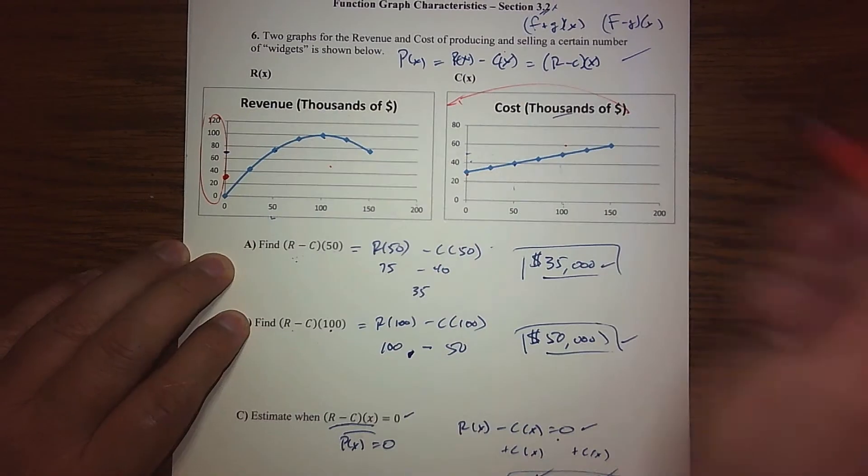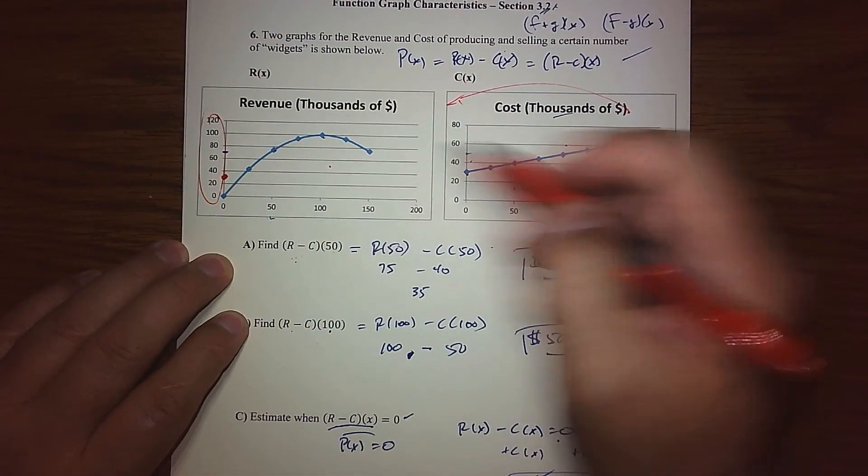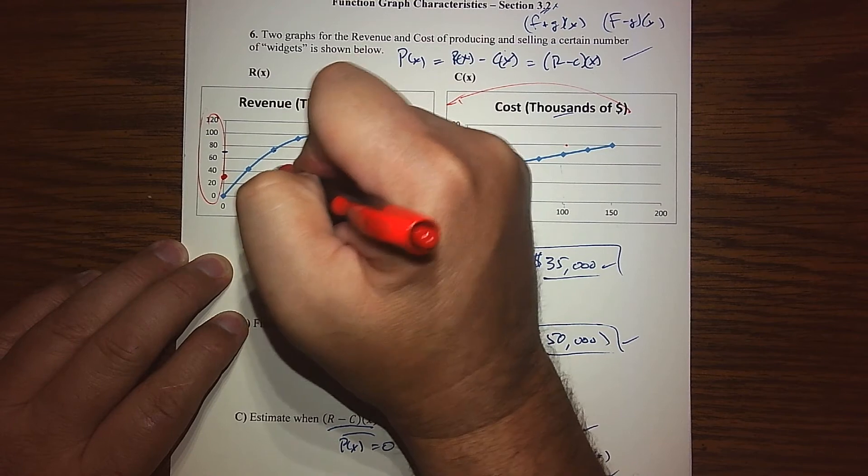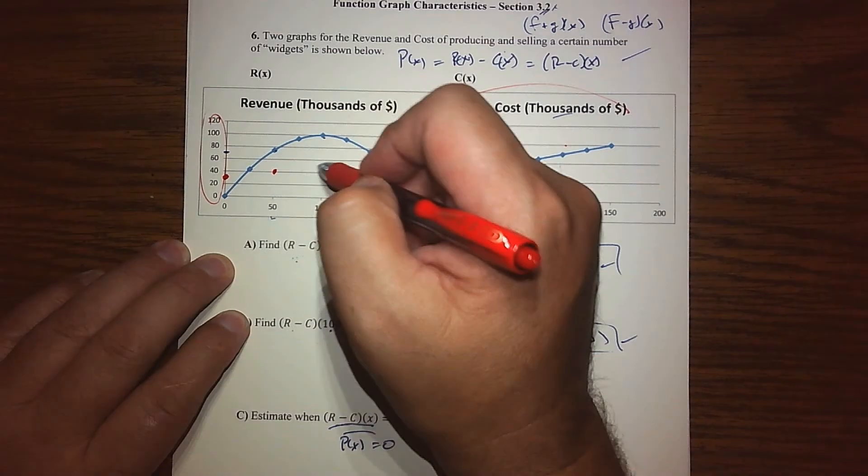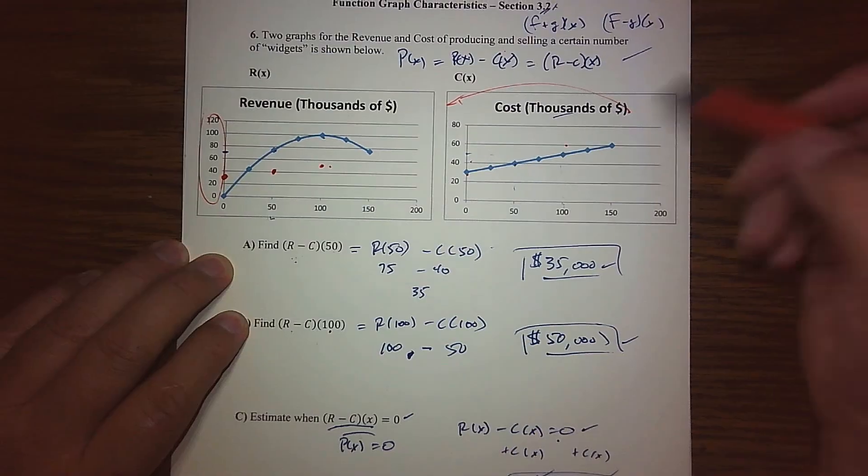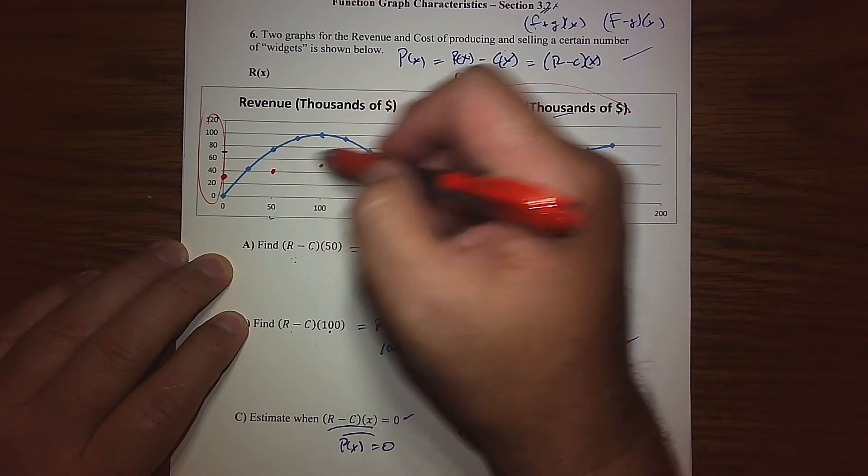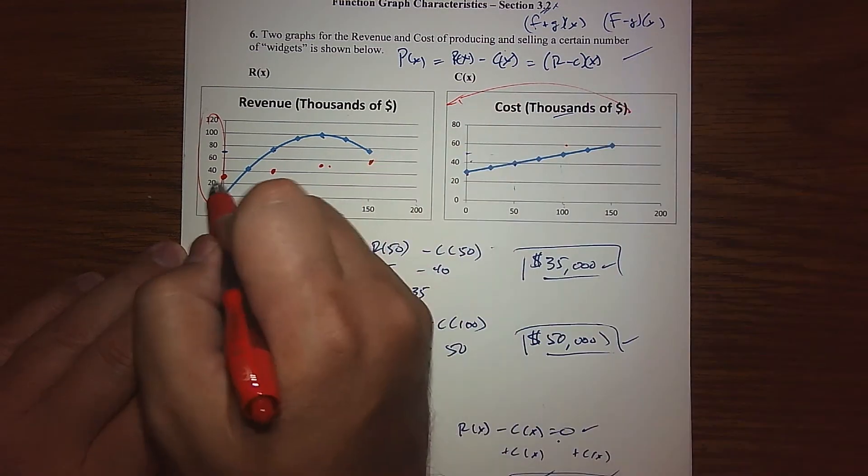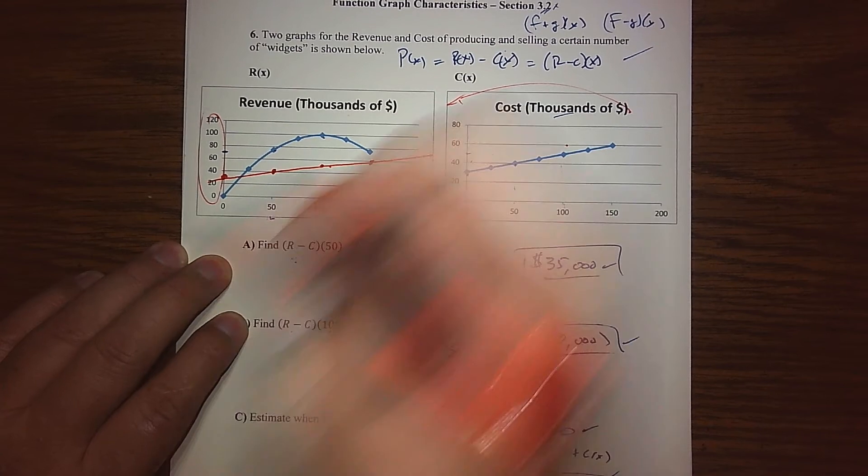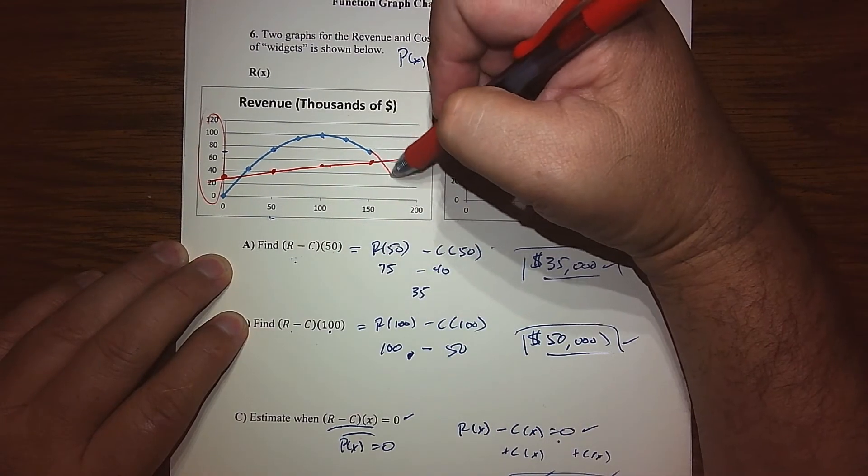We have 0 and 30 as a data point, so there's a cost value. We have 50 and 40, so there's a cost value. We've got 100 and 50, so there's a cost value. And we have 150 and 60, so there's a cost value. Let me put it in red here.